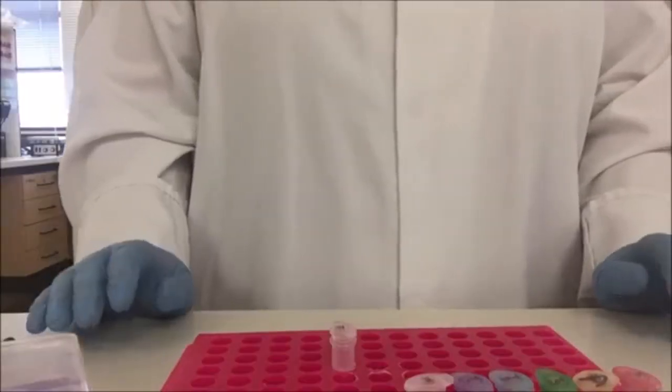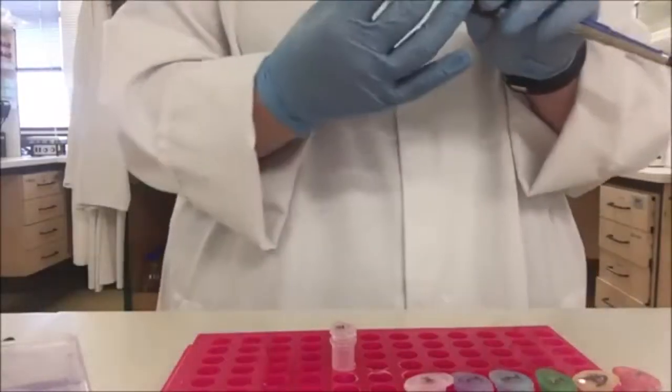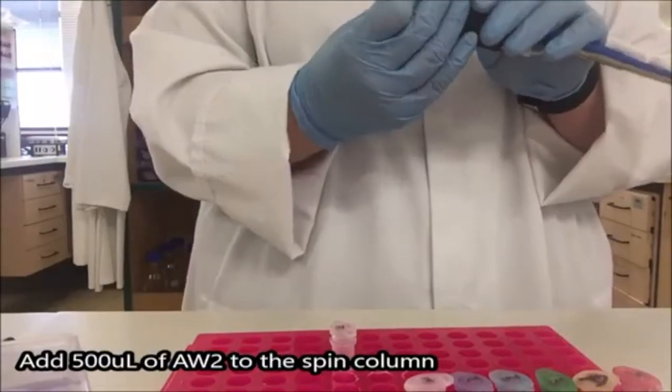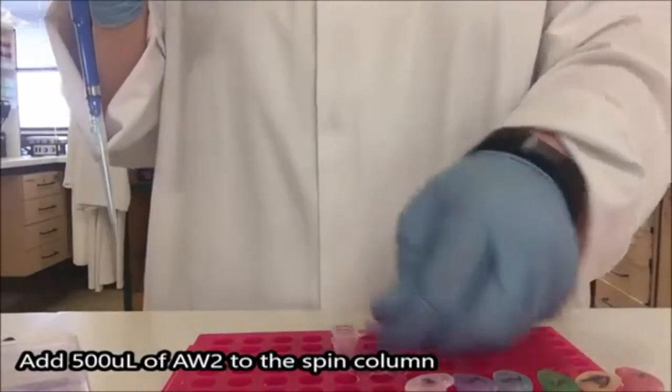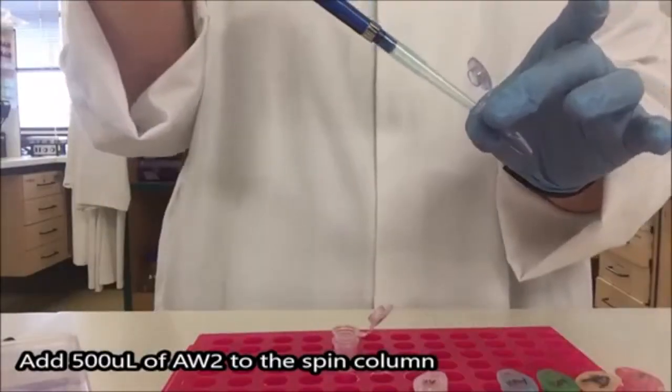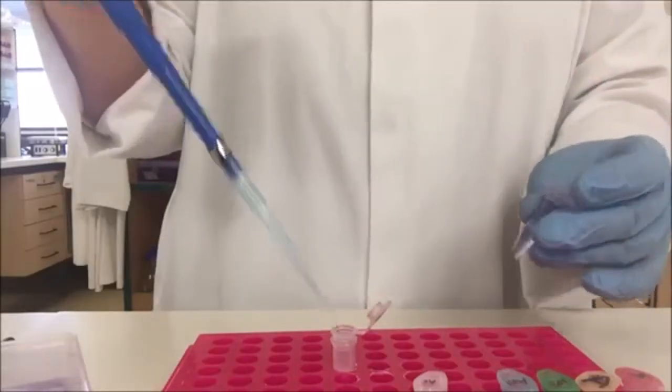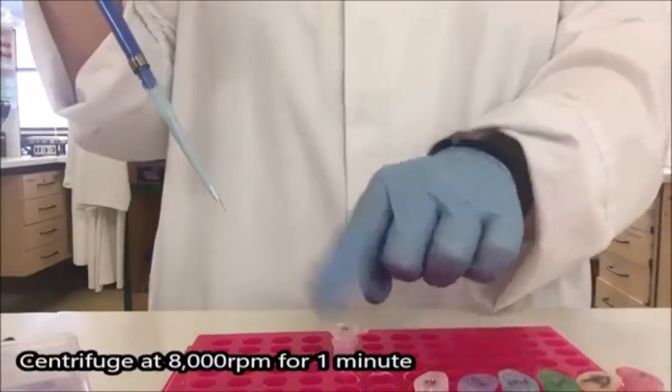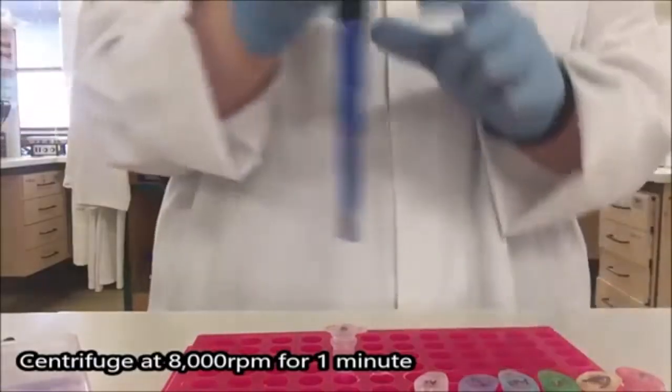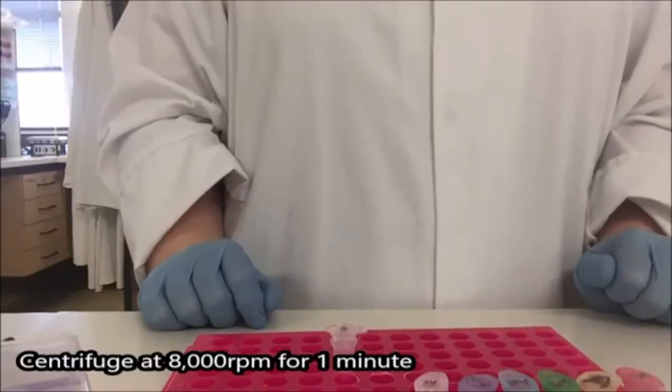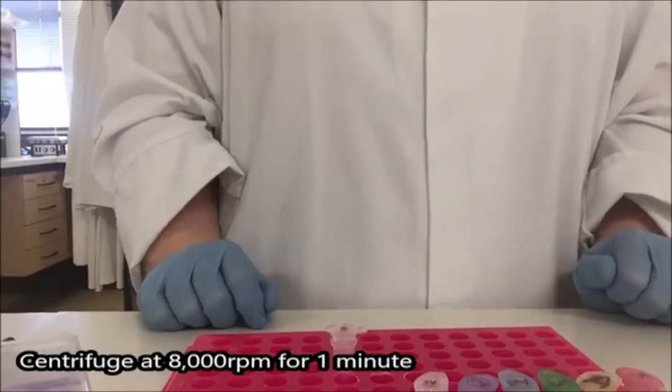I'm now going to go through the wash step, set my pipette to 500 microliters. And I'm going to add AW2 into the top of the spin column. Lid goes on, pipette into the trash. And I'm going to centrifuge this for one minute at 8000 rpm.